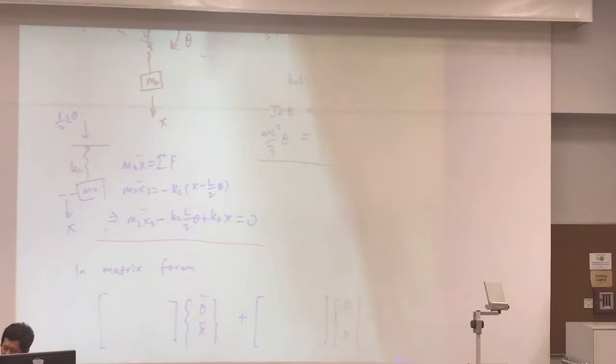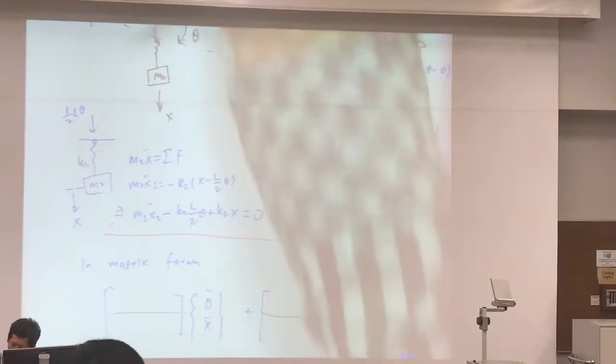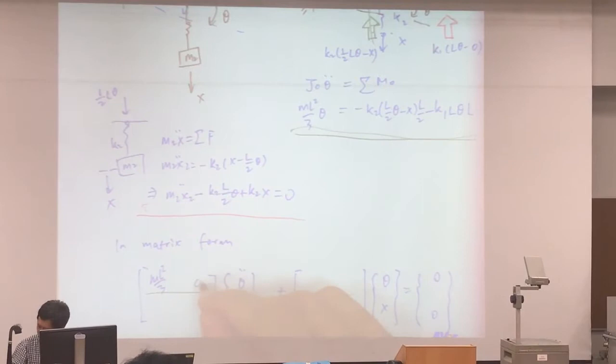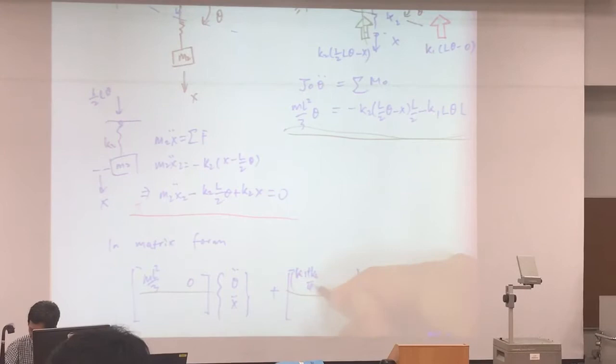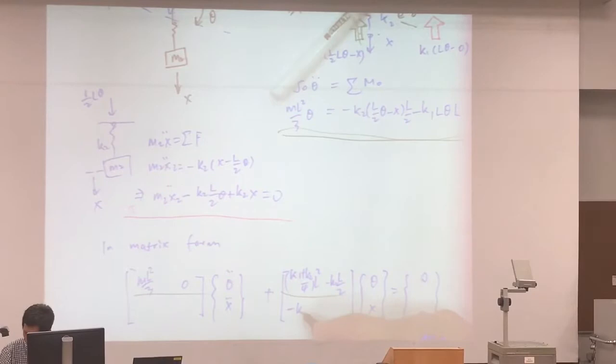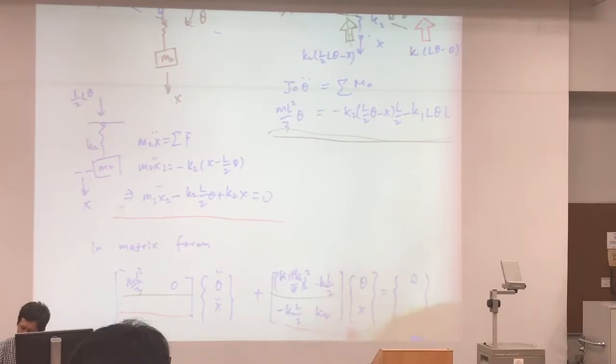So to fill up the equation, first equation, first row, with this that's your starting point and then zero. Then this is K1 plus K2 over 4 L squared minus K2 L over 2. And this is K2 L over 2, K2. And you obtain it from the second row of the equation.